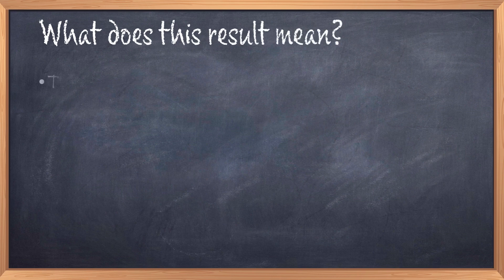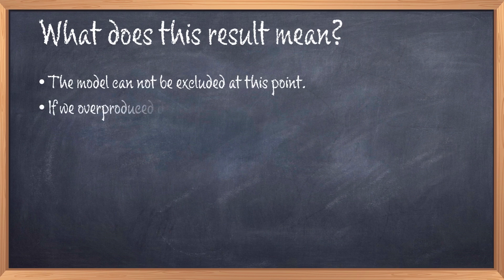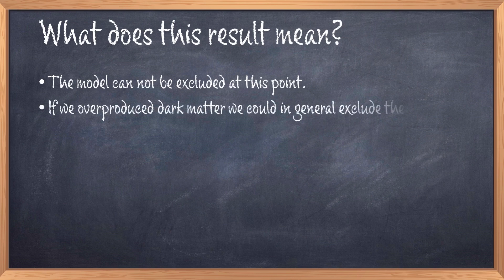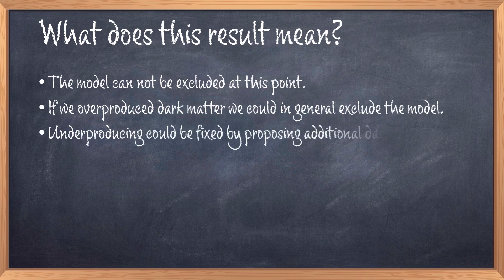So what does this mean? It means that we cannot exclude the model, yet at least. The model could potentially work, but it might not work because of some other aspects that we haven't considered yet. The most important is probably that we are not overproducing dark matter, because if the relic density of the model would be too high, then in general it means that the model would be dead. Underproducing dark matter might not be such a big issue, as it could be resolved by adding additional dark matter to the model. In this sense, overproducing is worse than underproducing.